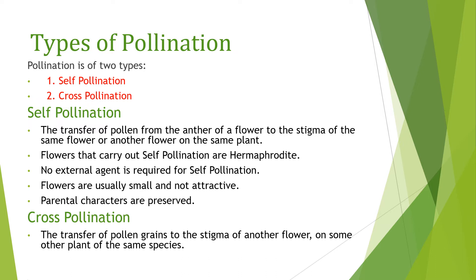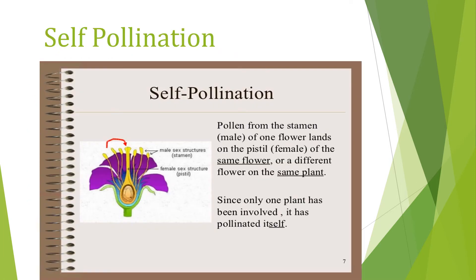Cross-pollination is the transfer of pollen grains to the stigma of another flower on a different plant of the same species — this is called cross-pollination. You can see here in the figure: male sex structures are the stamens, and female sex structures are the pistils. The pollen from the stamen of one flower lands on the pistil of the same flower or a different flower on the same plant.